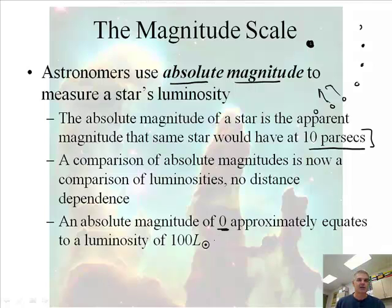If it's got a zero luminosity, it would be 100 L. What's this funny symbol? This actually, what this represents is the luminosity of our sun. So something that with a zero magnitude would be 100 times brighter than the sun, which would be quite a bit, wouldn't it?